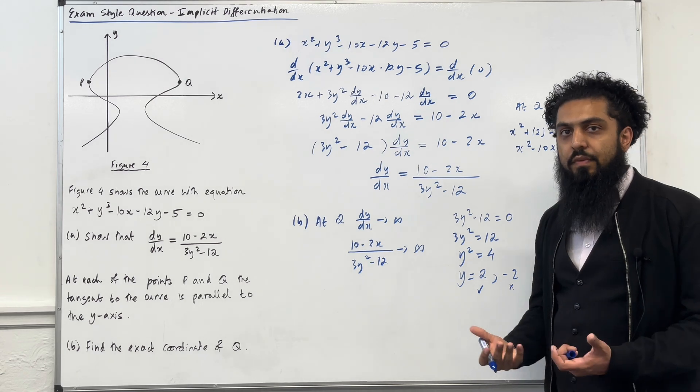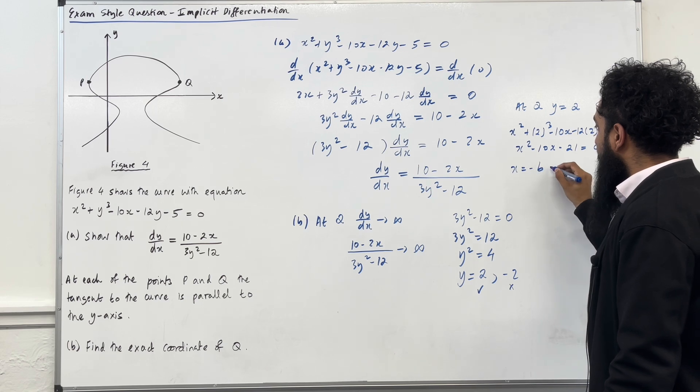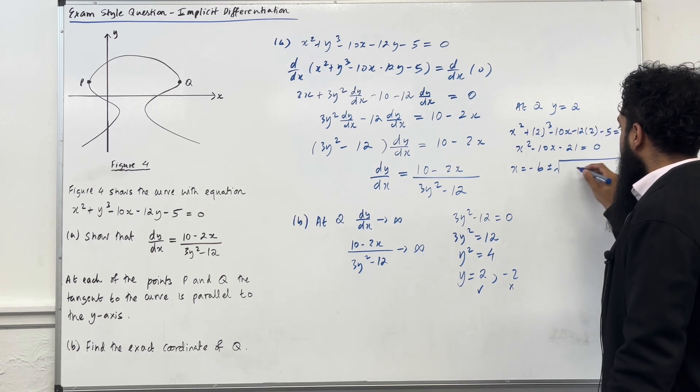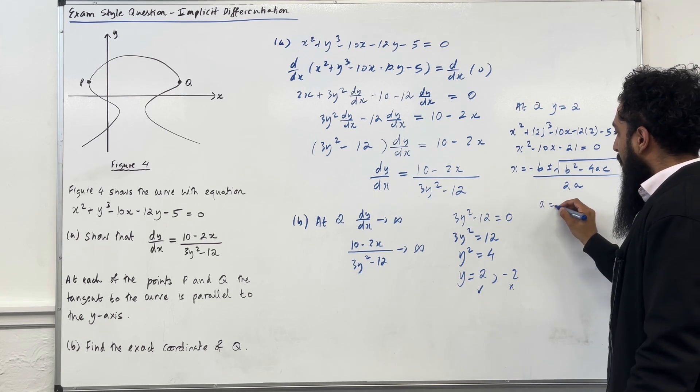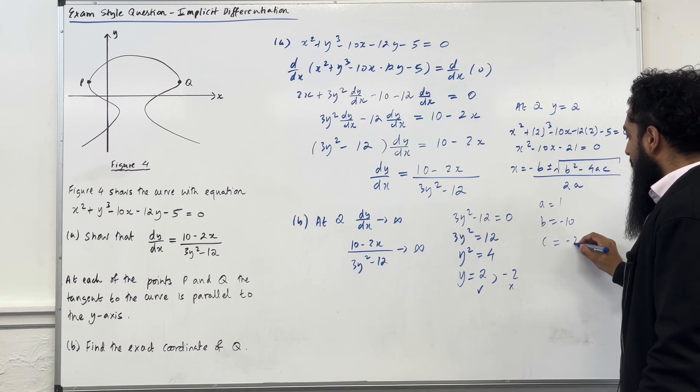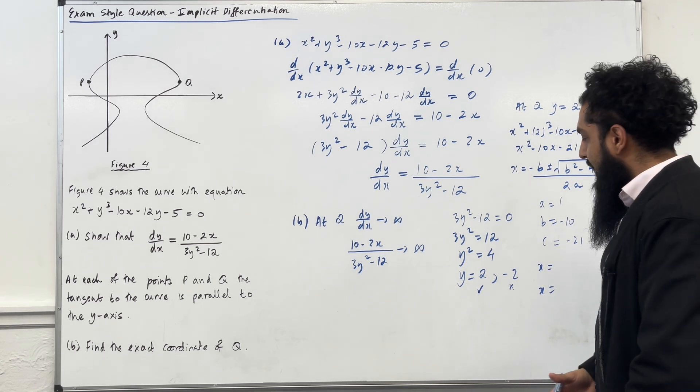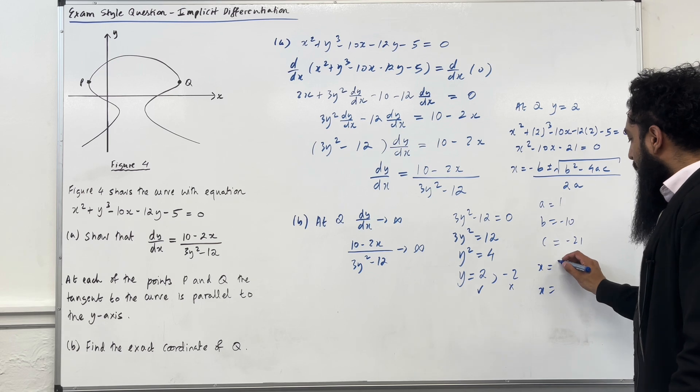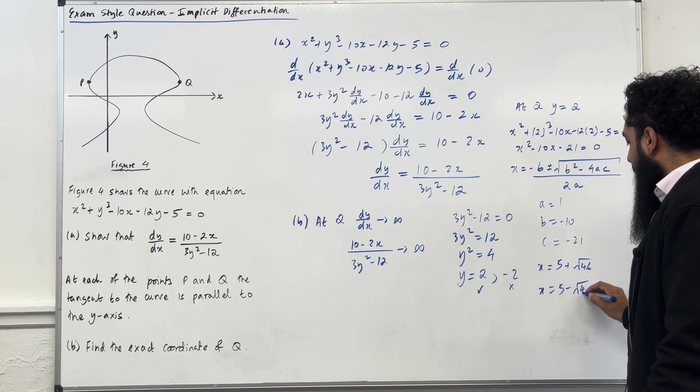So I need to solve this quadratic equation. I can use the quadratic formula x equal minus b plus or minus square root b squared minus 4ac over 2a. So the a, the coefficient of x squared is 1. b, the coefficient of x is minus 10. And c, the constant term is minus 21. So, applying the quadratic formula gives me x equal 5 plus square root 46. x equal 5 minus square root 46.